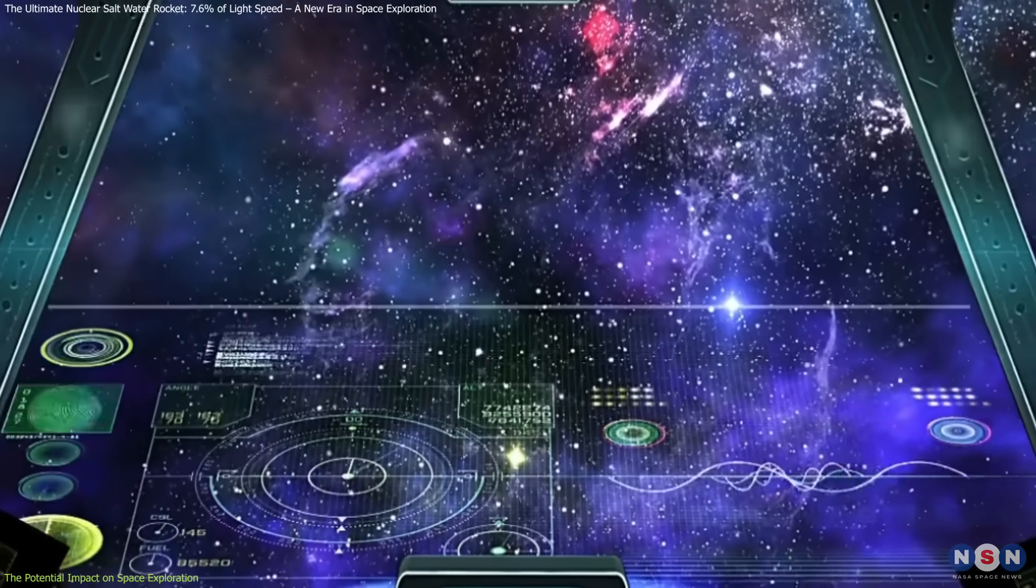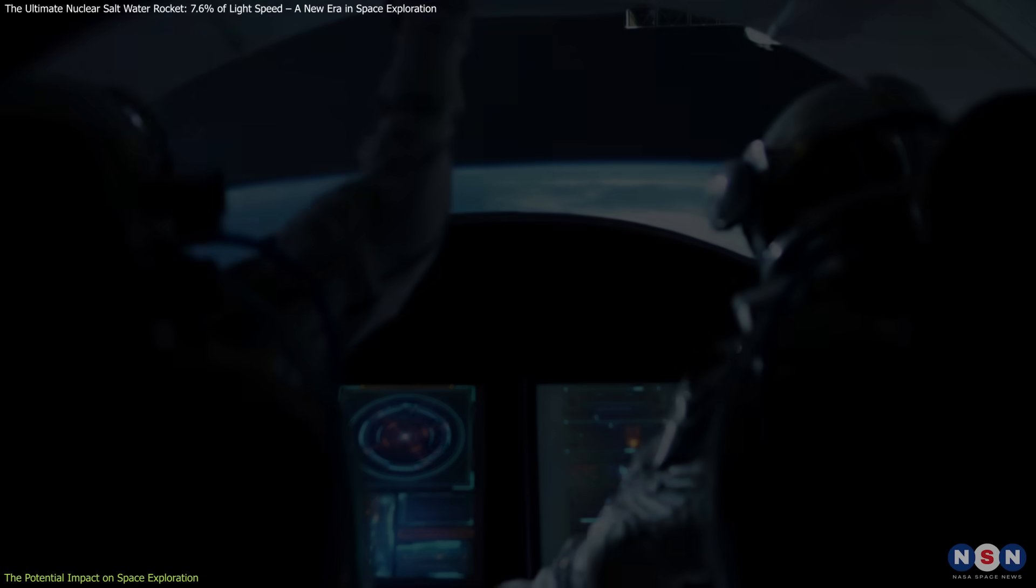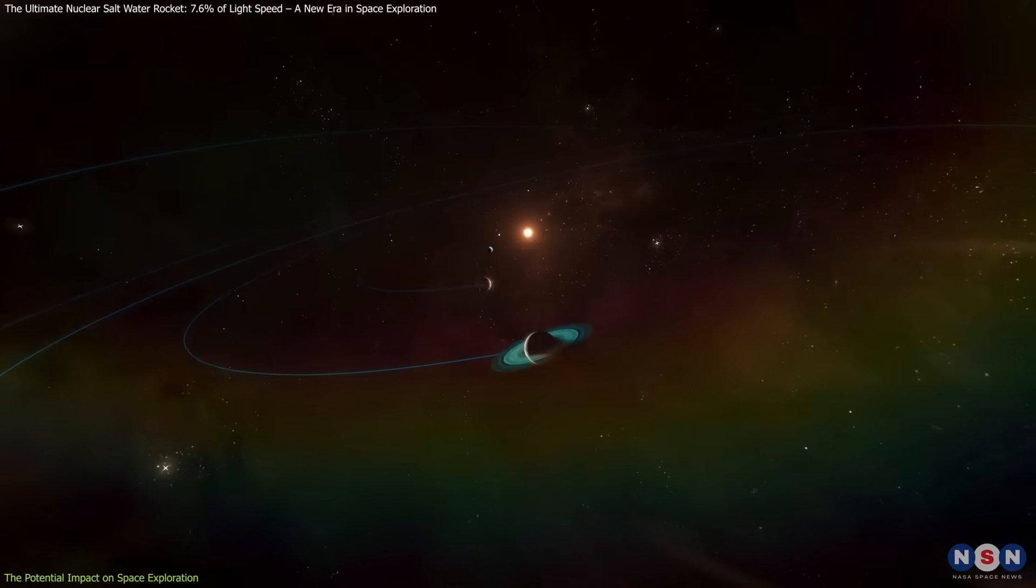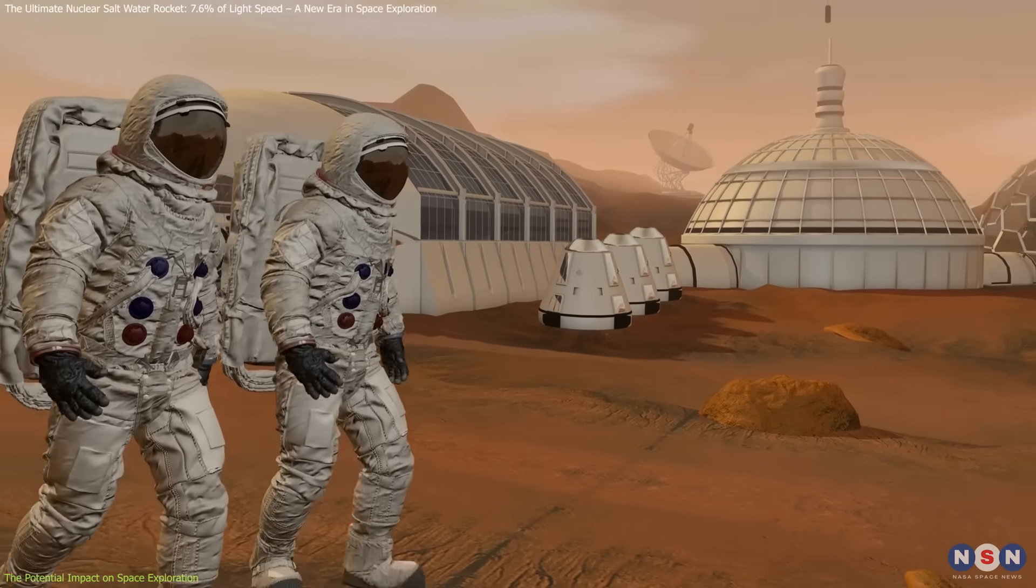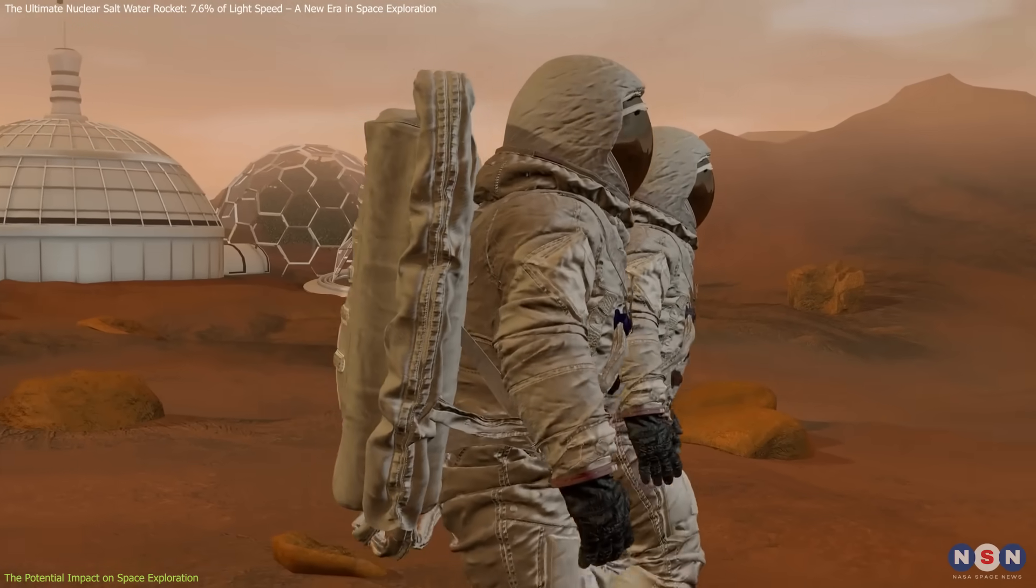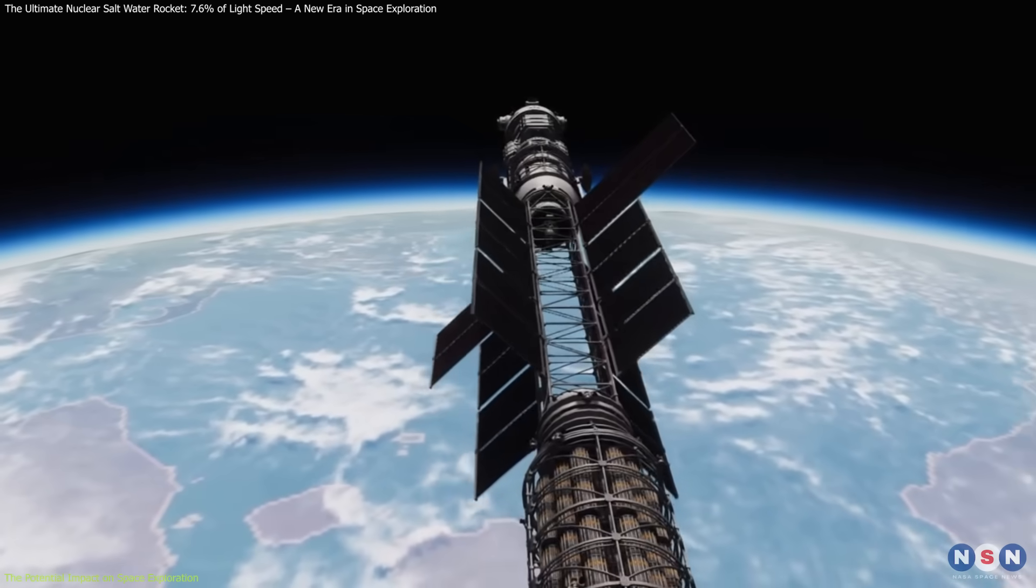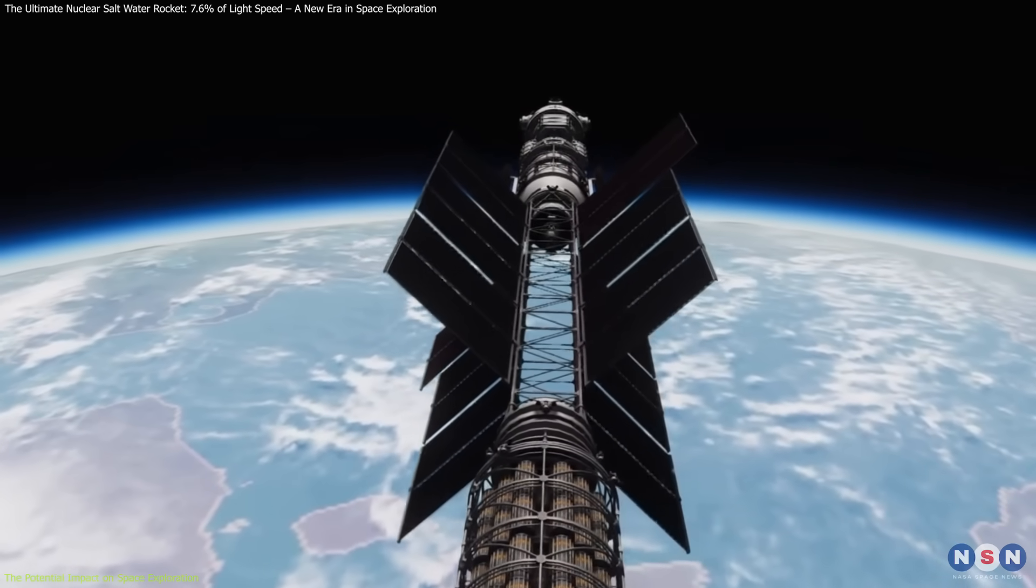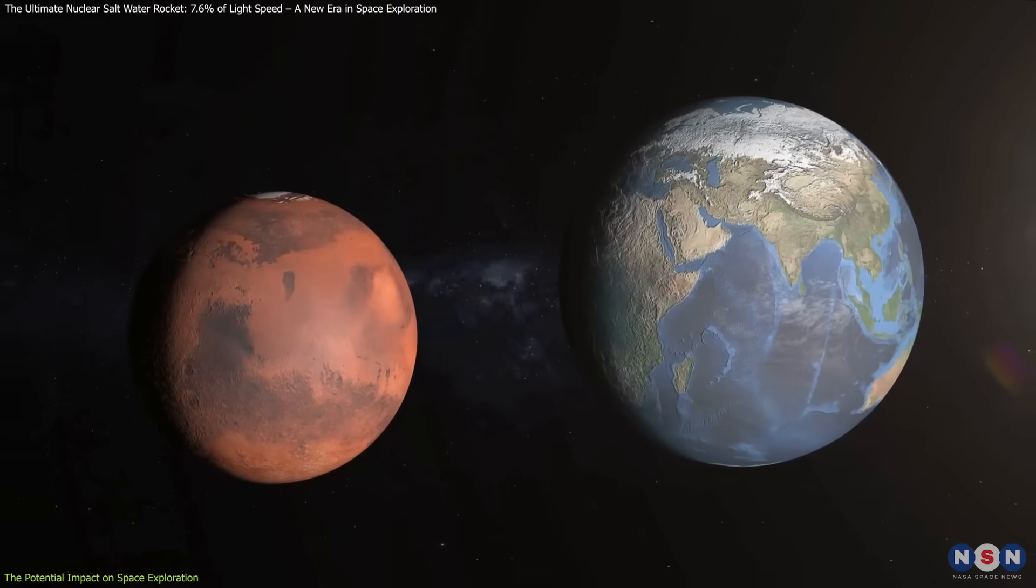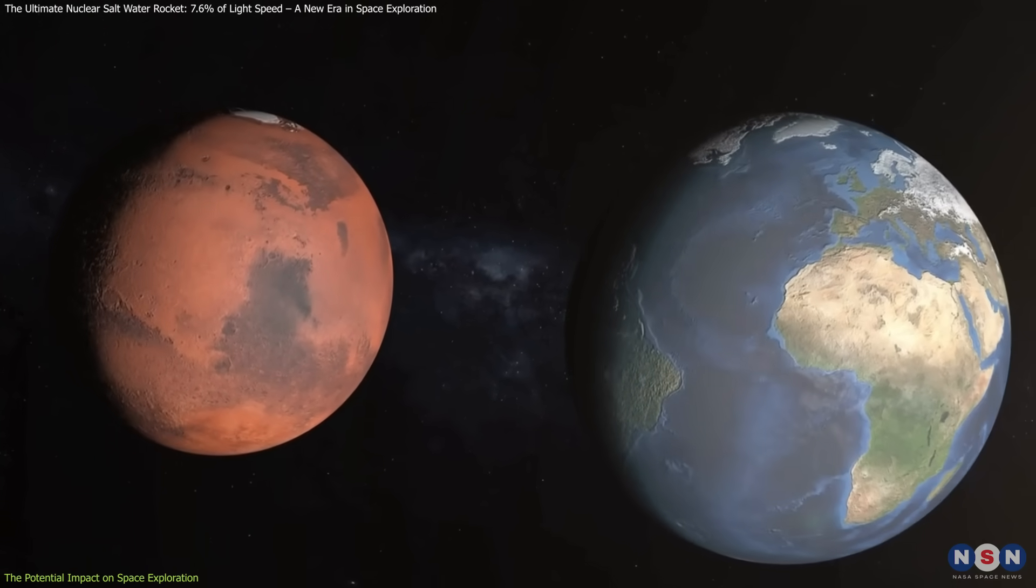Beyond interstellar travel, this rocket could also revolutionize exploration within our own solar system. Missions to the outer planets and their moons could be completed in a matter of weeks rather than years. Colonizing Mars, for example, could become vastly more practical, as transport times would be drastically reduced. Instead of taking six to nine months with current chemical rockets, a nuclear saltwater rocket-powered ship could make the journey in just a few weeks, enabling rapid transit between Earth and Mars for supplies, personnel, and colonization efforts.